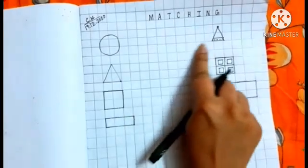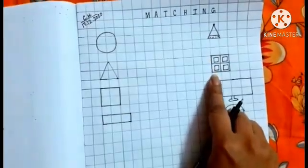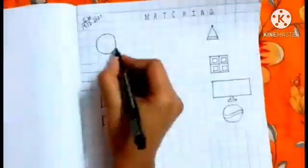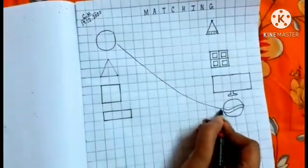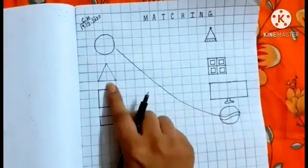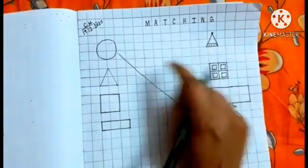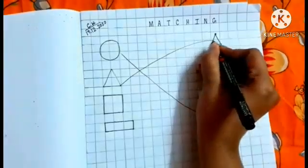Now we have to match the shapes with the objects. So find out the circle object. Yes, the ball is circle in shape. Next triangle. Is the Christmas cap a triangle shape? Yes. So let's join.